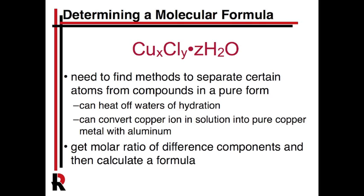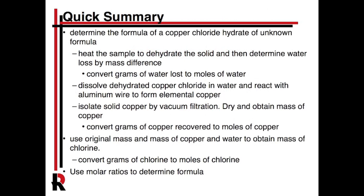You're going to use a copper chloride salt that also has waters of hydration — molecules of water that are part of the structure. The general procedure is that you're going to take a certain mass of copper chloride hydrate of unknown formula, heat it, and observe a chemical reaction. When that reaction is done, you're going to measure the water loss by how much mass has disappeared.